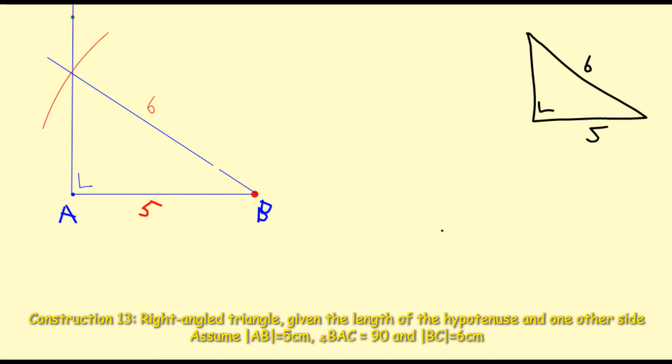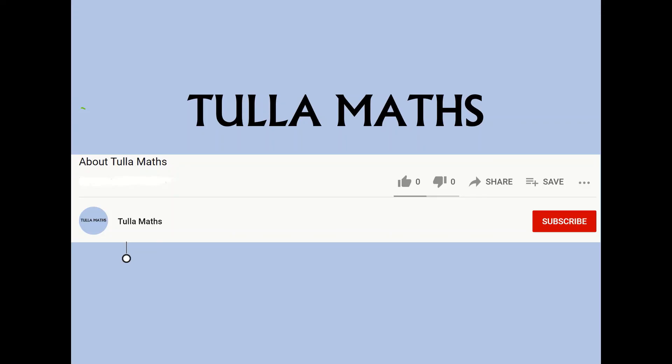And we are complete. So just to recap, they wanted us to mark in two lengths, a 6 and a 5, which we have, and a right angle triangle. Thank you for watching another tutorial video from Tullamaths. Make sure and subscribe.